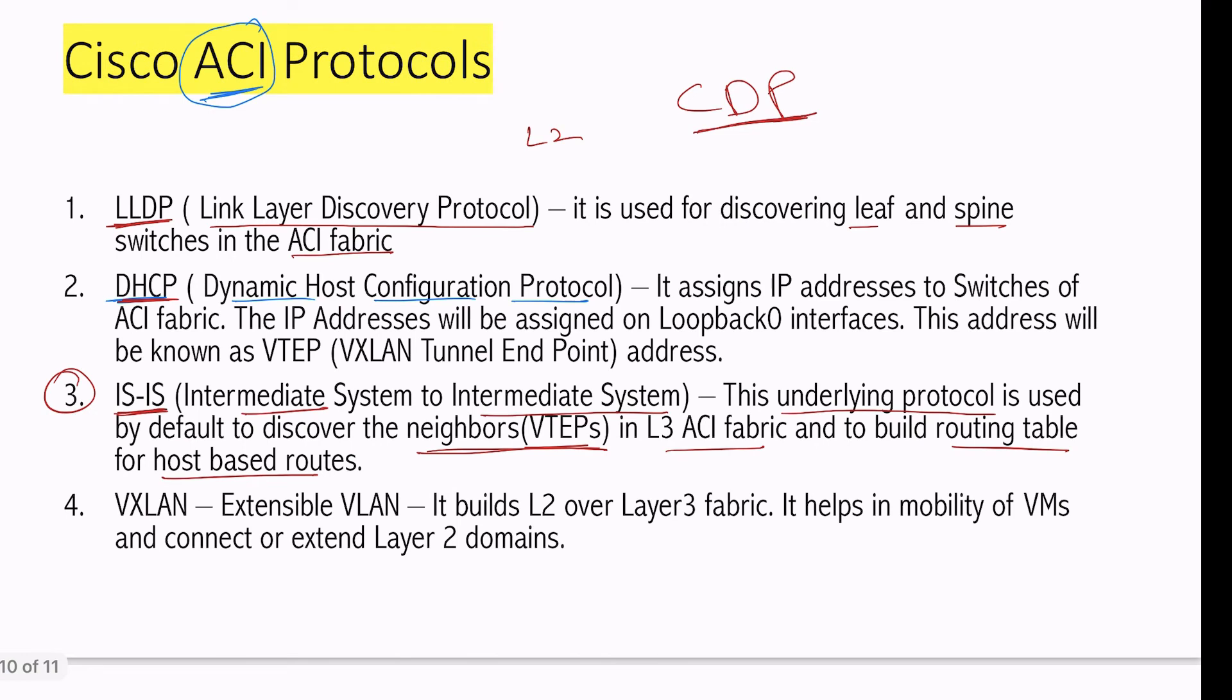The last one is VXLAN, Extensible VLAN. This is an extension of VLANs. Actually, the VLAN that we use has a limitation that we can only create up to 4096 VLANs in a device. It is, I believe, 16 bits. That is why it is up to 4096 only. But with this VXLAN, it has a large range. Up to 16 million VLANs can be created.